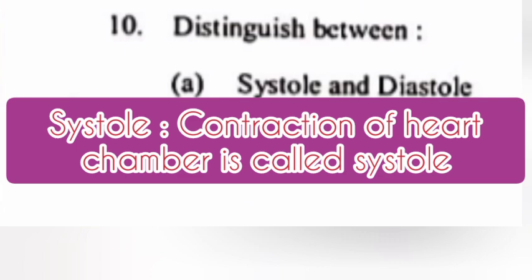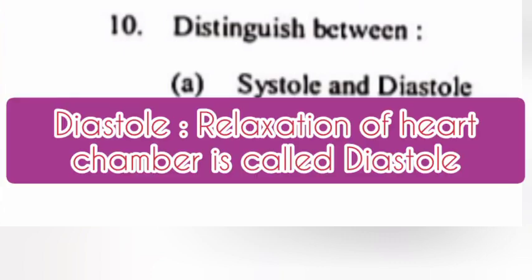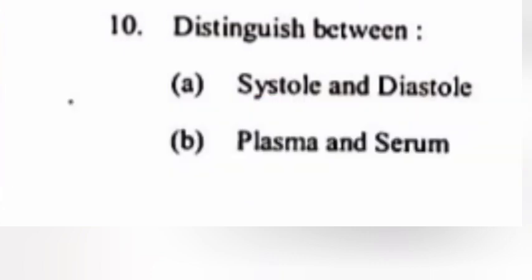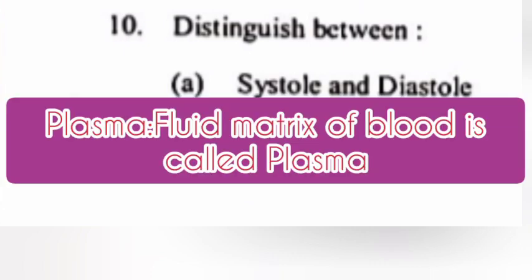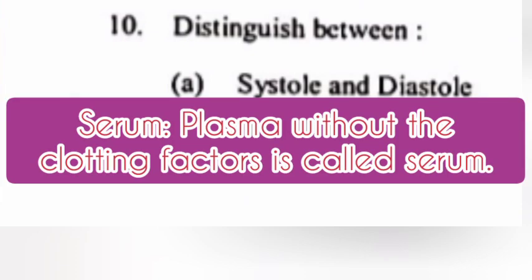10. Distinguish between: (a) Systole and diastole — answer: contraction of a heart chamber is called systole; relaxation of a heart chamber is called diastole. (b) Plasma and serum — answer: the fluid matrix of blood is called plasma; serum is plasma without the clotting factors.